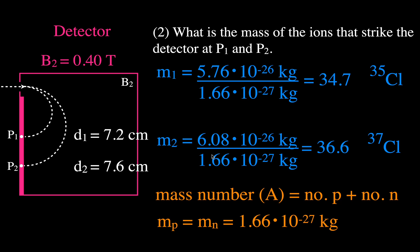And there you go. I hope you found that video helpful. We went through how the velocity selector works, how the detector works, how you calculate the mass, and then how you get the mass number and the isotope — chlorine-35 and chlorine-37 in this case. Thank you so much for watching.